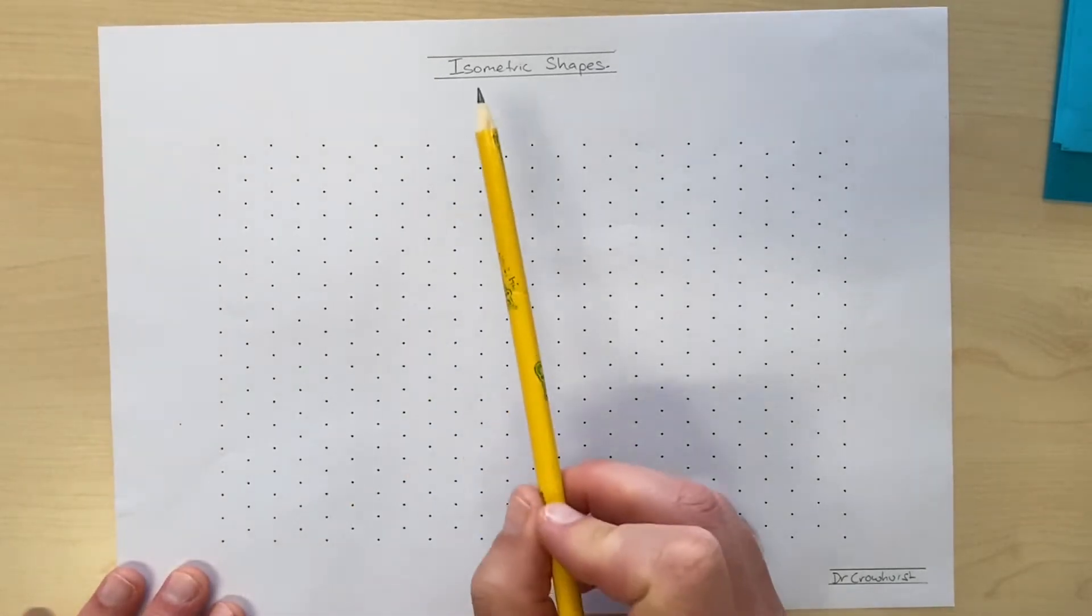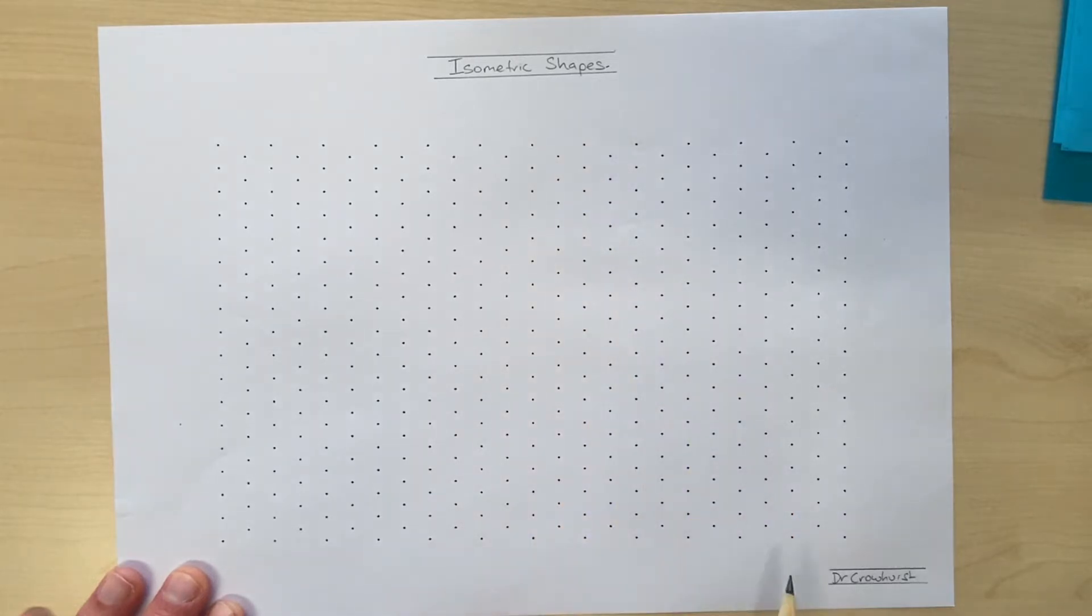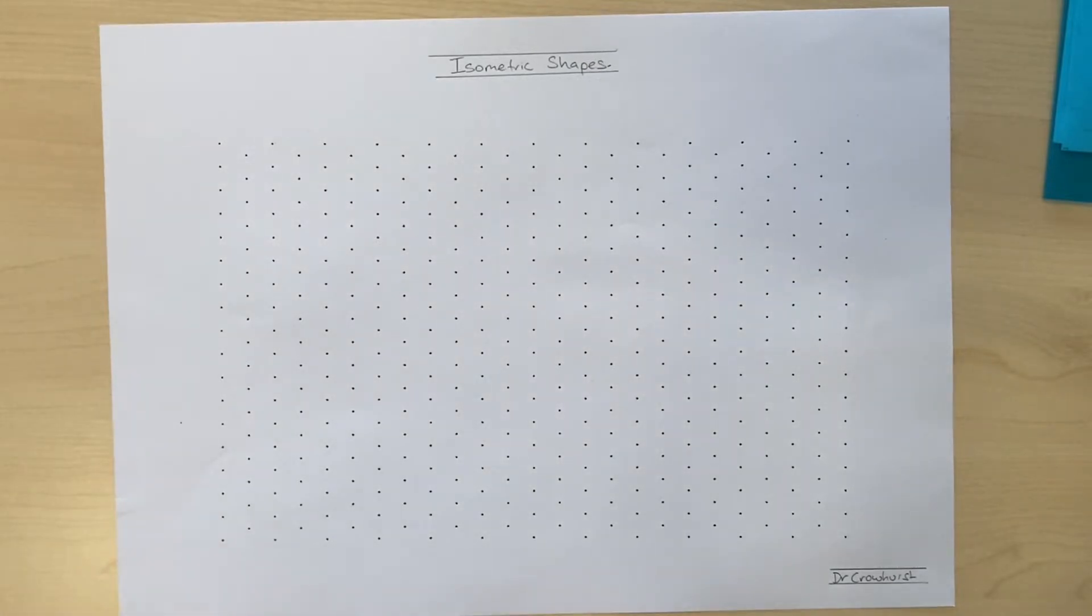Remember, as always, we label what we're doing. For today, it's isometric shapes, and in the bottom right corner is always your name. So go ahead and pause the video and do that right now. Once you've labeled your piece of paper that you're going to be drawing on,